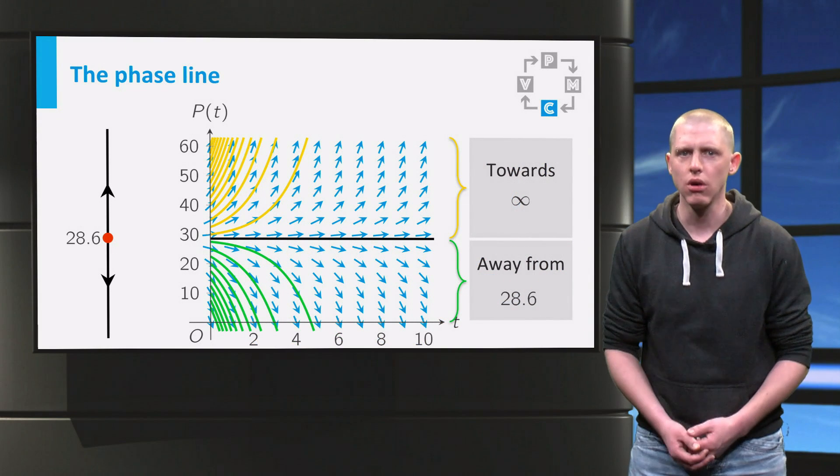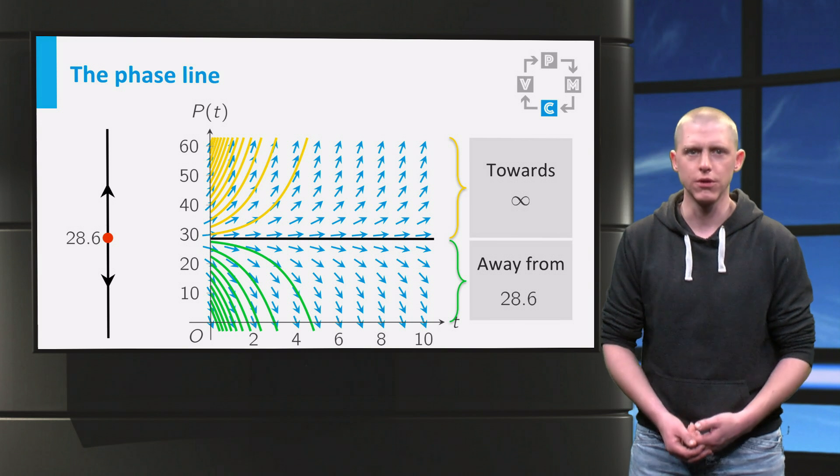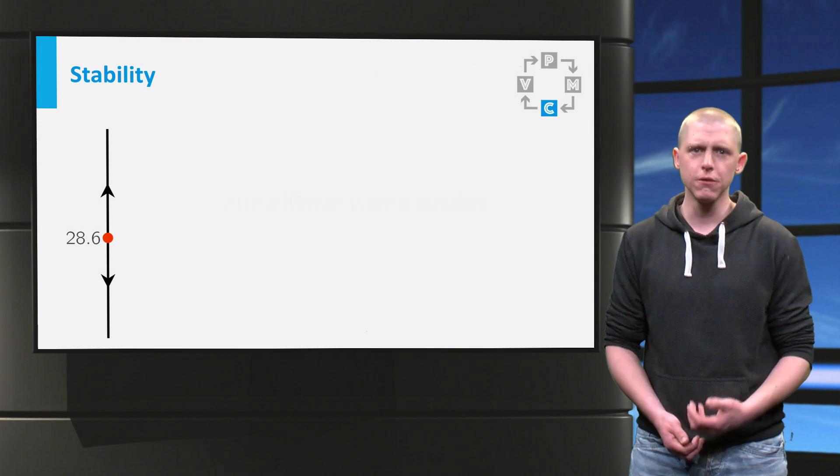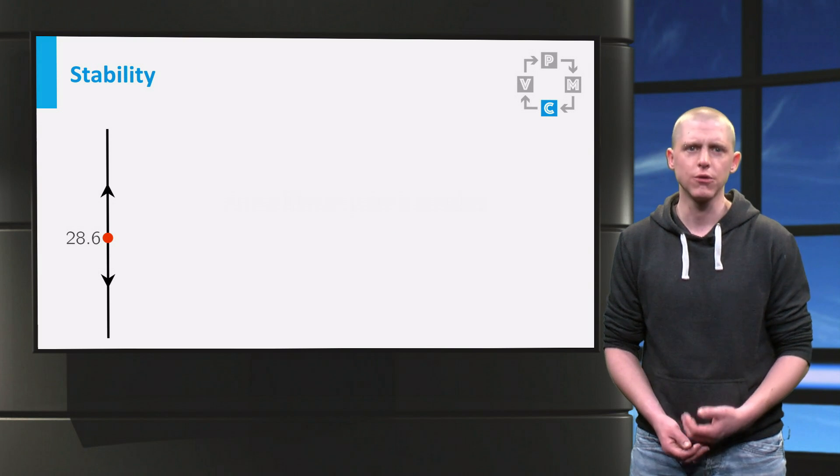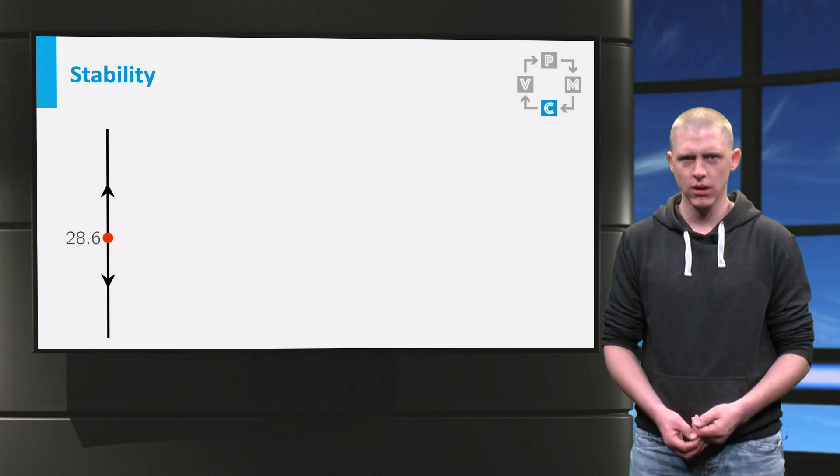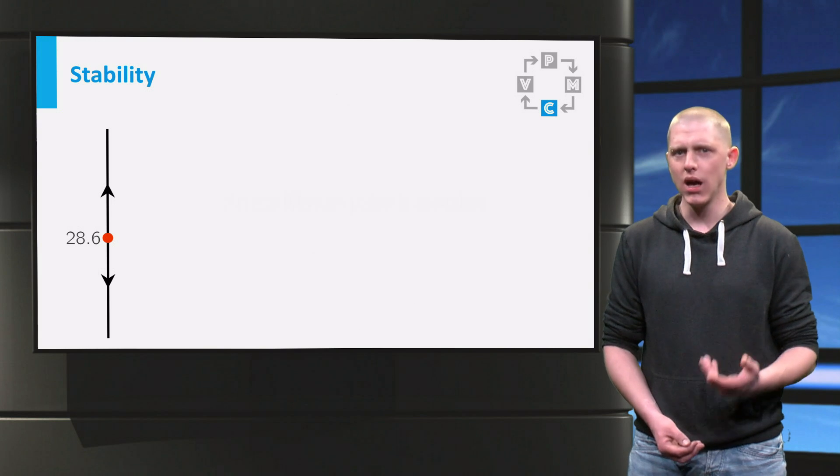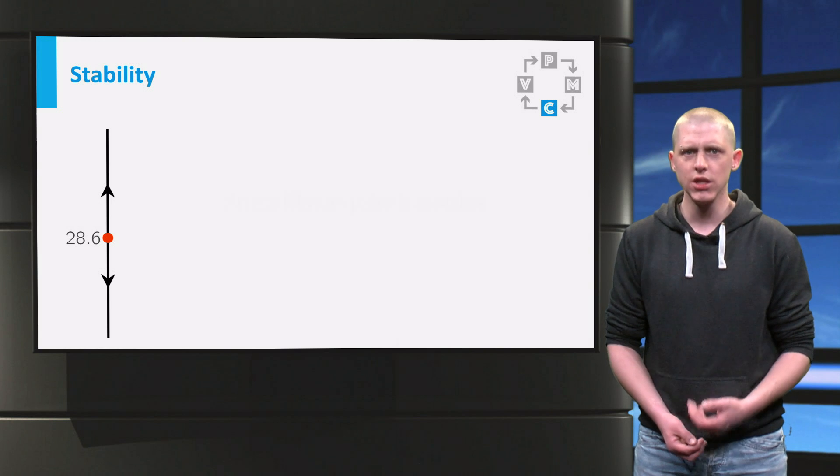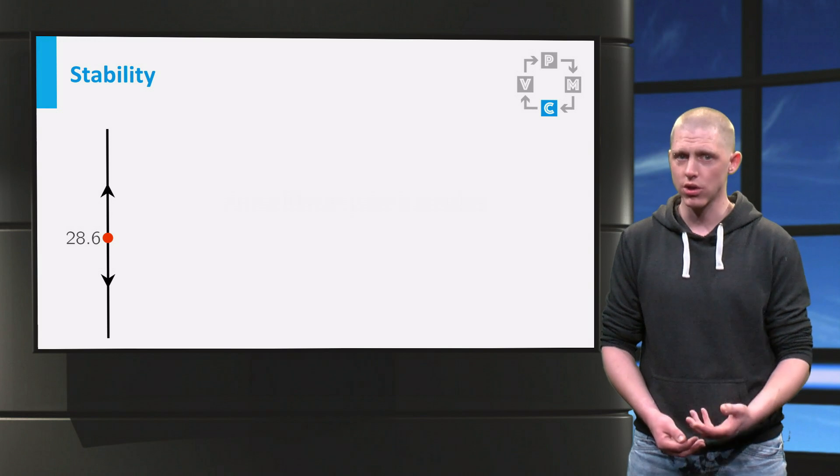This graph is what is called a phase line of the ordinary differential equation. Now let us take a closer look at the phase line and the population of 28.6 rainbow fish. This point has above and below two arrows pointing away from 28.6. This means that if you have a smaller or larger population, your solution curves would move away from this value.